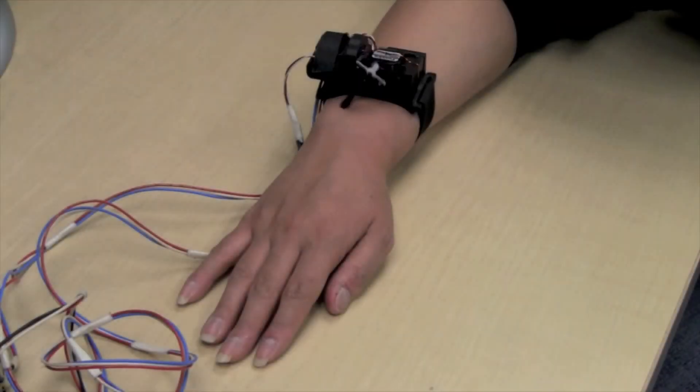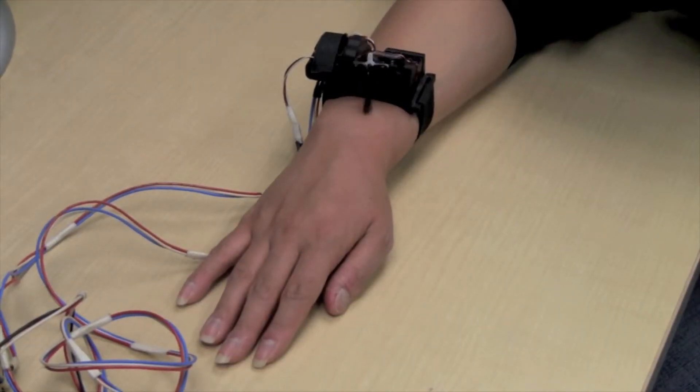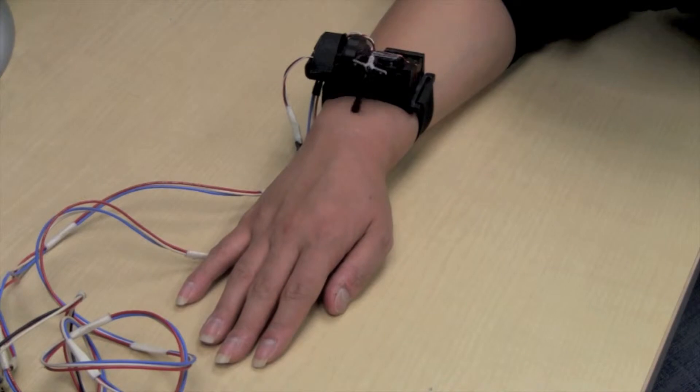The two servos mounted in series enable the contacting tip to follow any two-dimensional trajectory within its workspace, including tapping sequentially across a wrist.